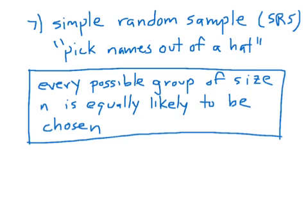Finally, we've reached the gold standard of sampling designs, which is something called a simple random sample, abbreviated SRS. It's going to be by far the most important sample — the one that's least likely to be biased, and the one used over and over again in future chapters. Essentially, just pick all the names out of a hat. Do a simple random sample of Sacred Heart students: throw all the names in a hat, pick out 10 names — that's a simple random sample.